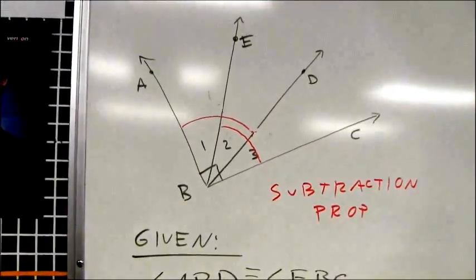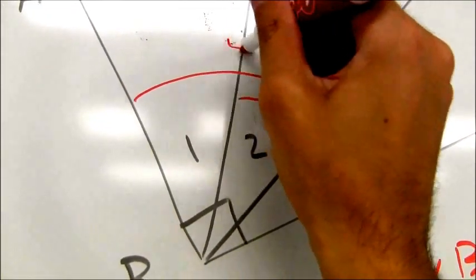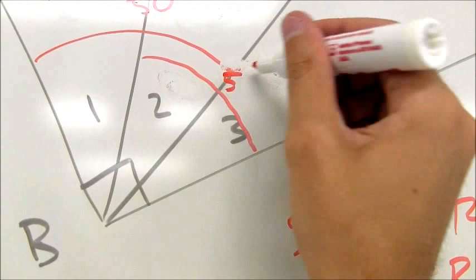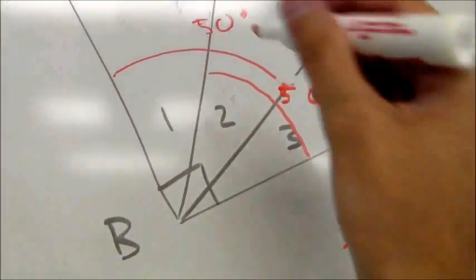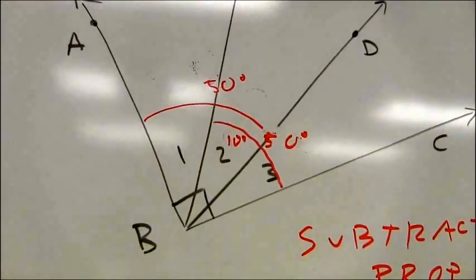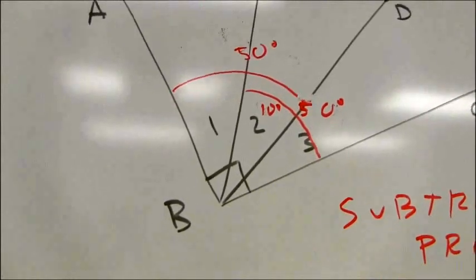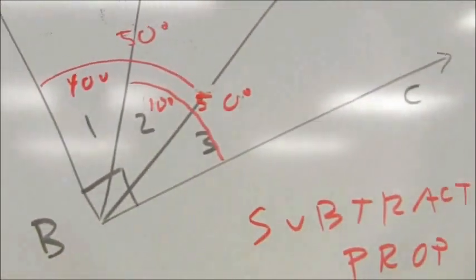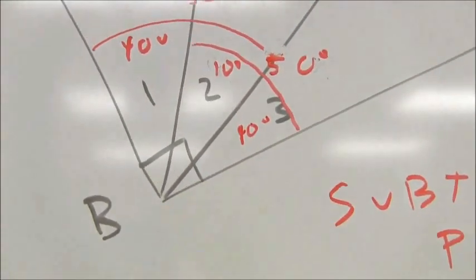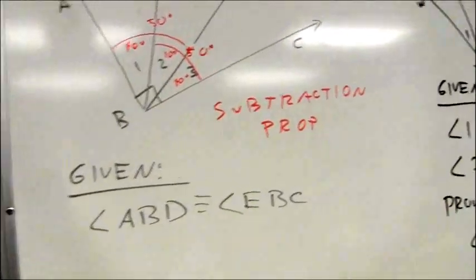If you need to try this with actual numbers, make the original angle 50 degrees and the congruent one also 50 degrees. They have a shared angle in the middle — maybe make that 10. To find the measure of angle three, you'd take 50 minus 10, and that gives you a 40 degree angle on that side. On the other side, you'd take that 50 degree angle, subtract the 10, and you'd also be left with 40. So you're subtracting to find your missing angle measures.